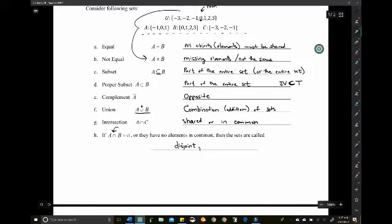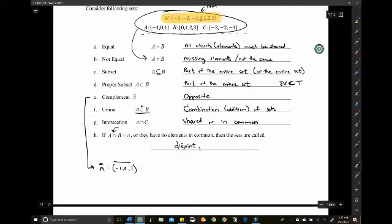For example, if I wanted to say what's the complement of A, the set A is negative 1, 0, and 1. So the complement is everything else. You look at that and consider the universe. The universe is negative 3, negative 2, negative 1, 0, and 1. So the complement of A is going to be everything but those three numbers. We'd have negative 3, negative 2, and then 2 and 3.